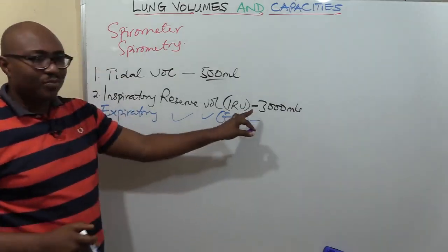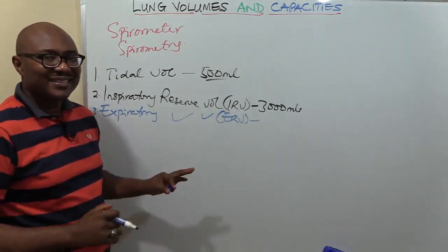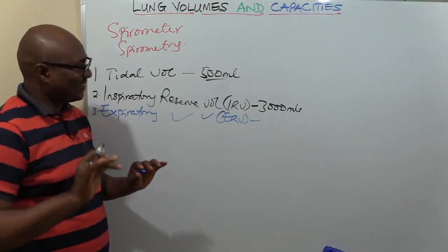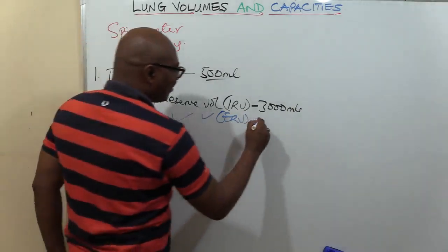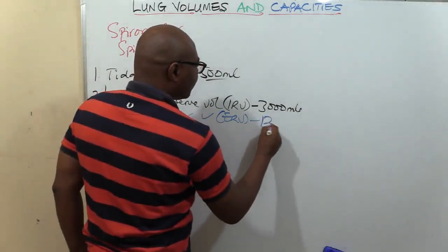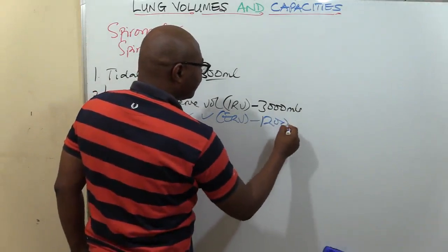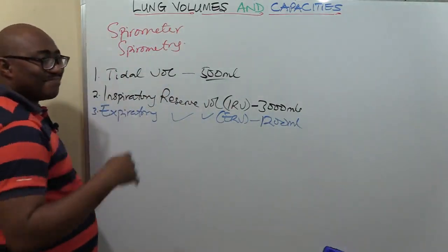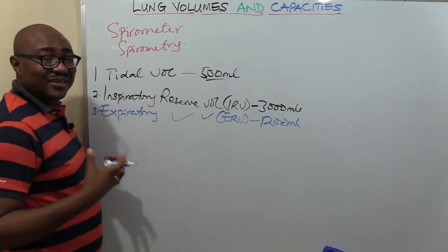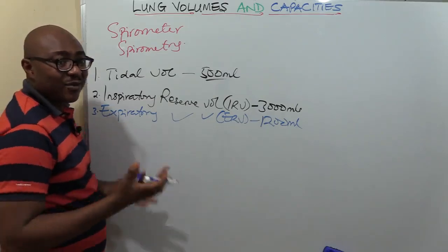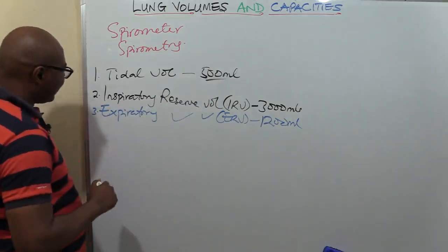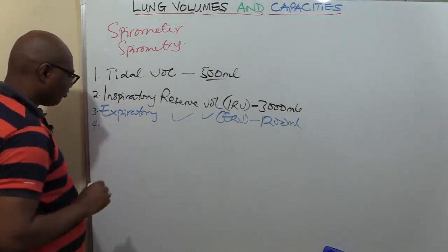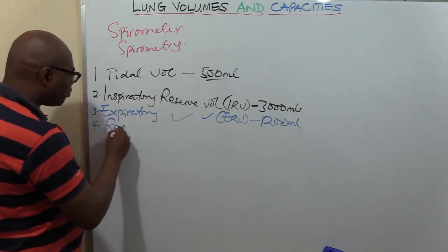The ERV is actually smaller than the IRV — about 1,200 milliliters. It is the maximum volume of air you can expire over and above the tidal volume. The fourth volume is called residual volume.